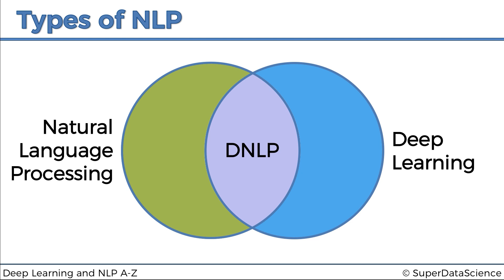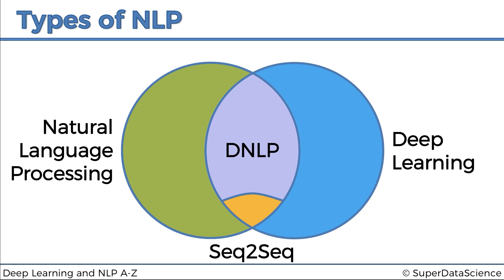Finally, there is another part of this Venn diagram which is very important to us: a sub-section of deep NLP called sequence to sequence. Sequence to sequence models are the most cutting-edge, most powerful models that exist right now for natural language processing, and that's what we're going to be looking at.